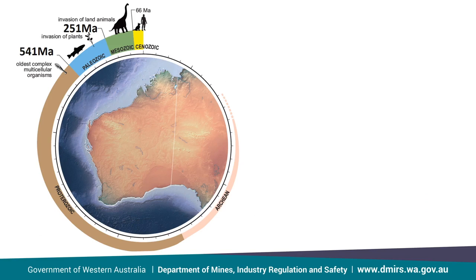So now you know what a microbialite is, you might be wondering why a paleontologist from the Geological Survey of Western Australia is giving a webinar on them. There is a very good reason: they are the most commonly found macrofossil in our state. Currently there are more than 2,000 documented microbialite localities in WA and this number is only increasing with each new project we undertake. Also, microbialites have the longest fossil record of any life on Earth — but exactly how old is that record?